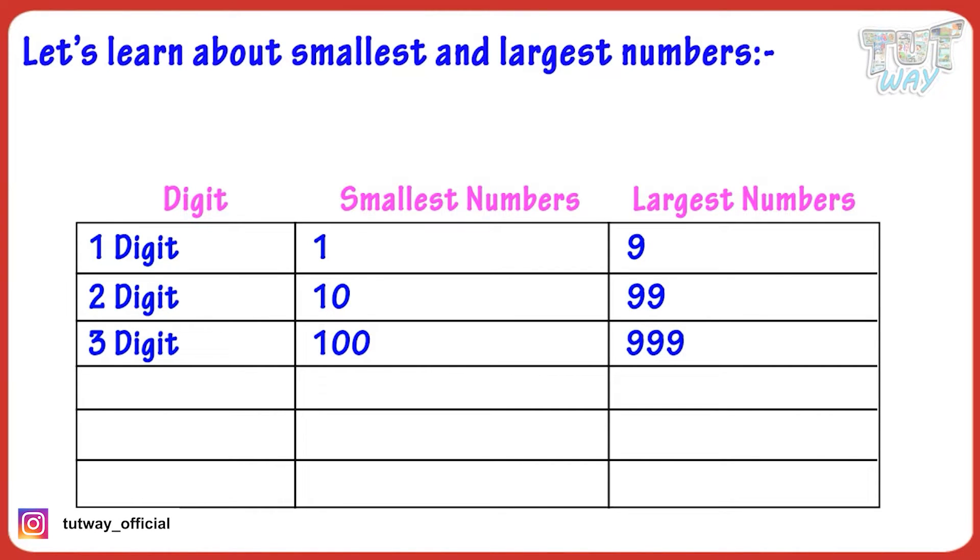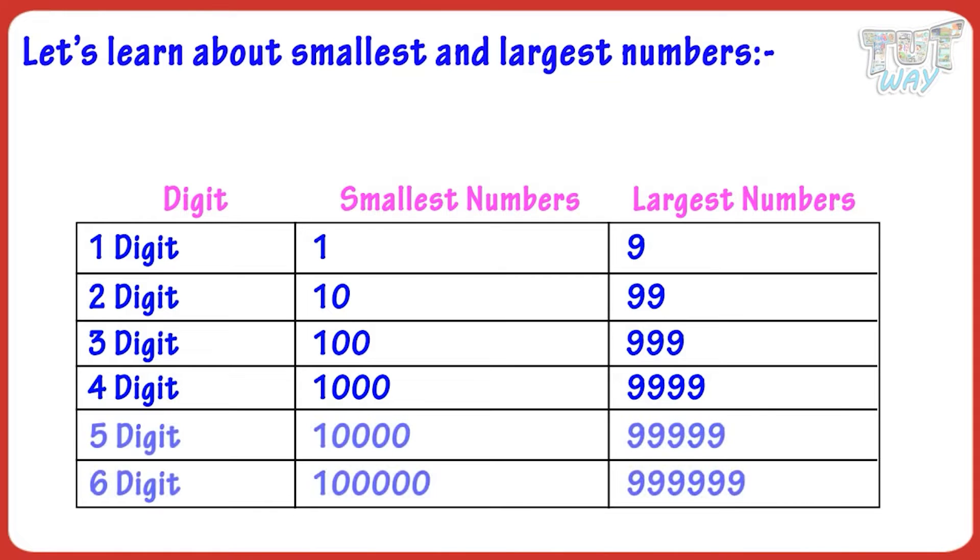999 is the largest three-digit number. 1000 is the smallest four-digit number, and 9999 is the largest four-digit number, and so on.